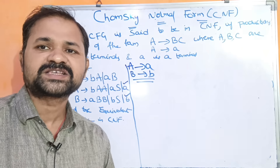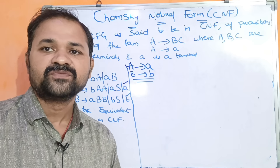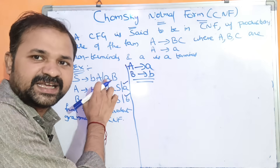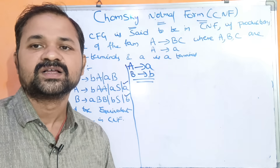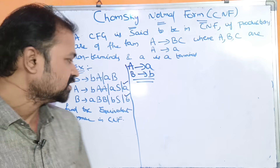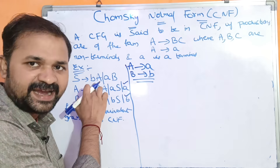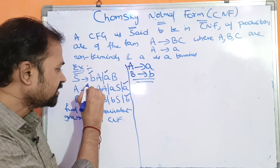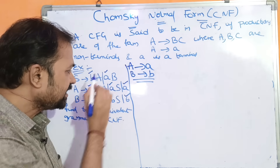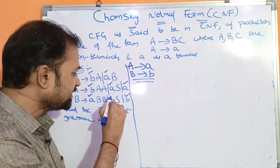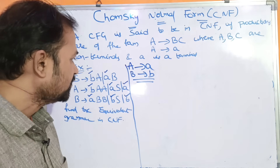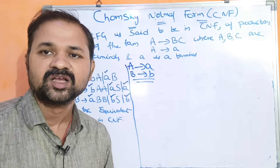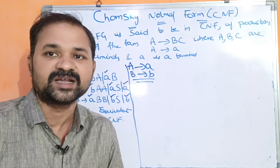Next, what we have to do is replace each terminal on the right-hand side with a non-terminal. The terminals on the right-hand side are: B in S→BA, A in S→AB, B in A→BAA, A in A→AS, A in B→ABB, and B in B→BS. We have to replace all these terminal symbols with non-terminals.